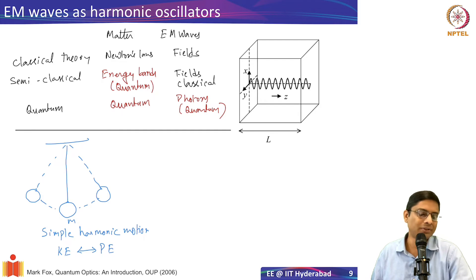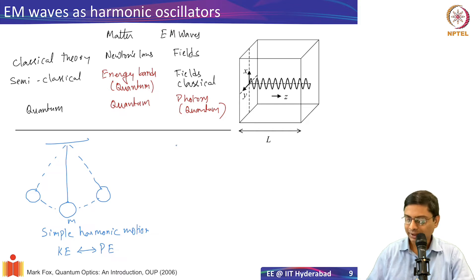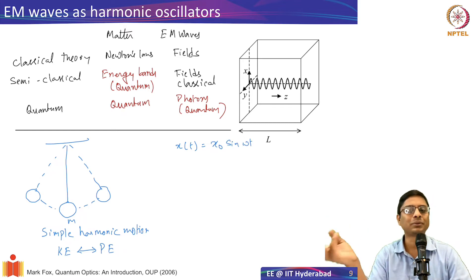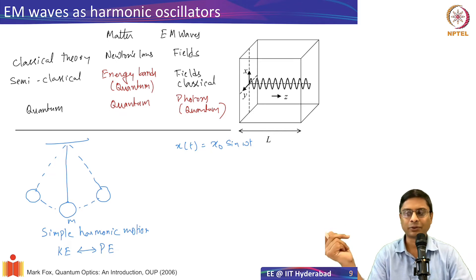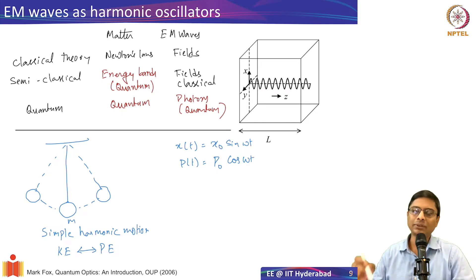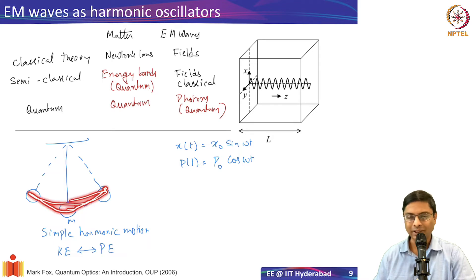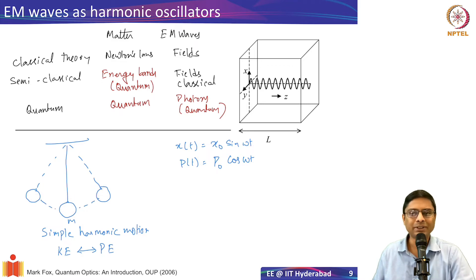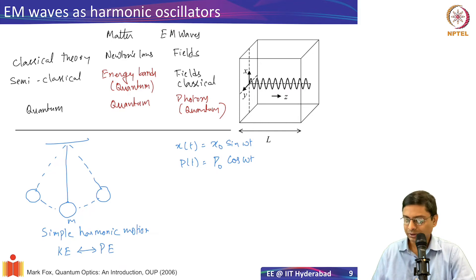To describe the motion, we can write the position as x(t) = x₀ sin(ωt), a sinusoidal motion. The momentum is going to be out of phase: p = mω x₀ cos(ωt), which we can call p₀. As the mass reaches the extreme position, velocity decreases and momentum reduces, then increases again — these are two out-of-phase components, familiar from classical mechanics.